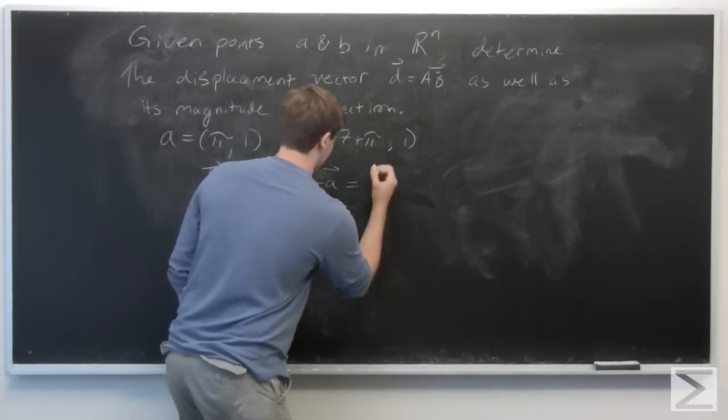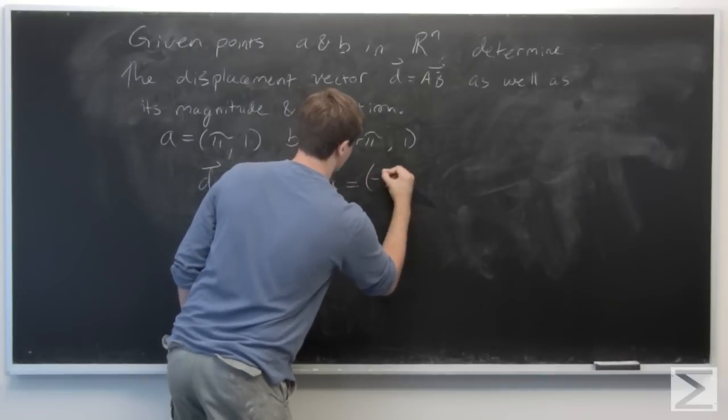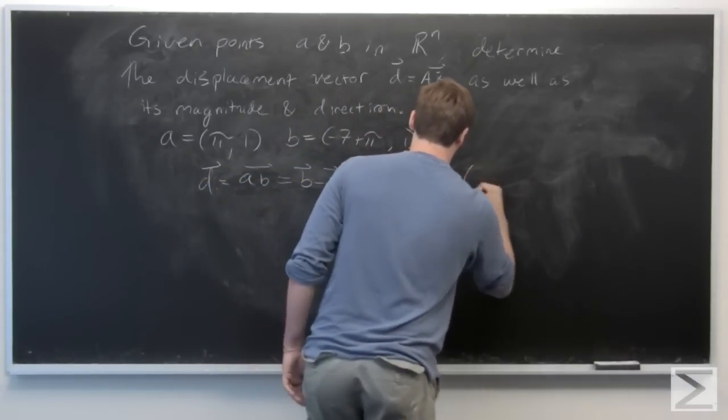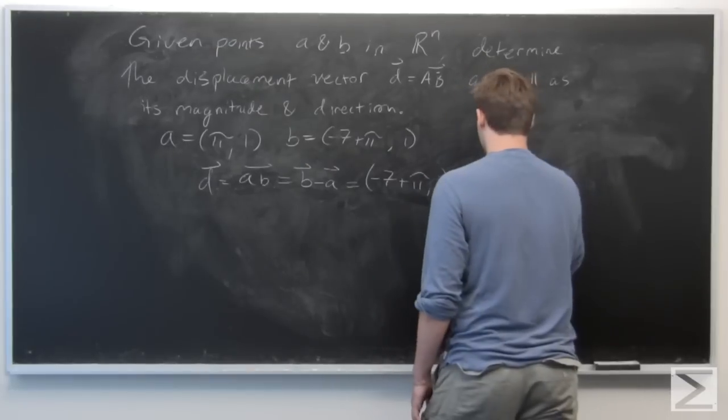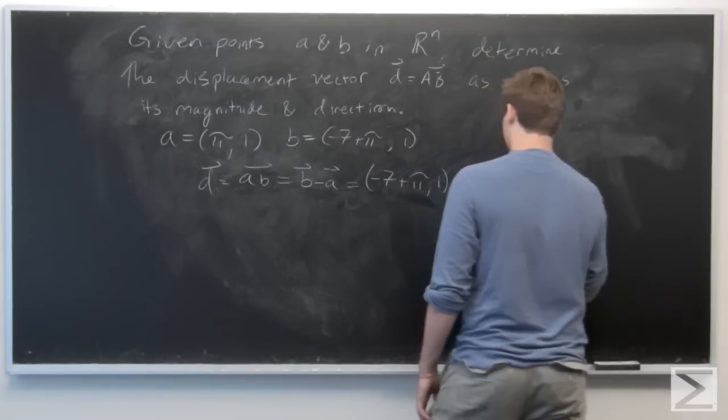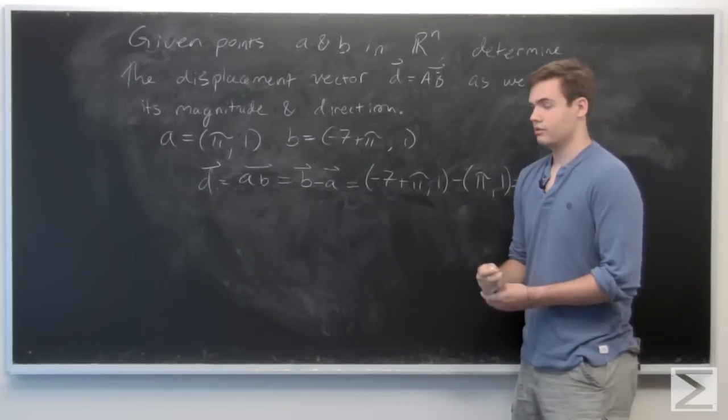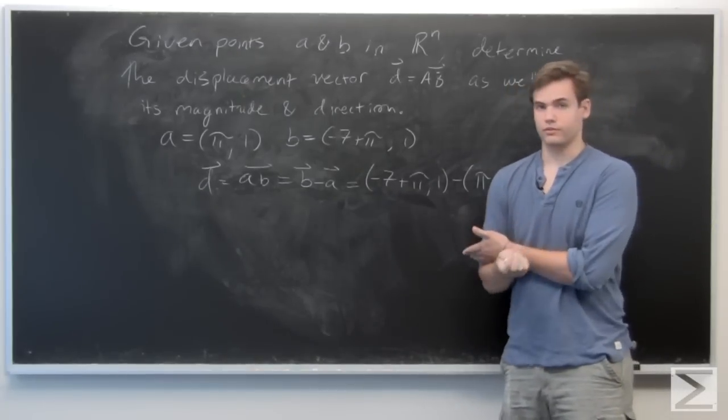So here this is just minus 7 plus π comma 1 minus π comma 1. We do vector arithmetic coordinate-wise, so we just take the coordinate-wise difference of these two.